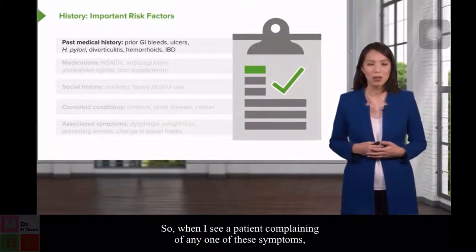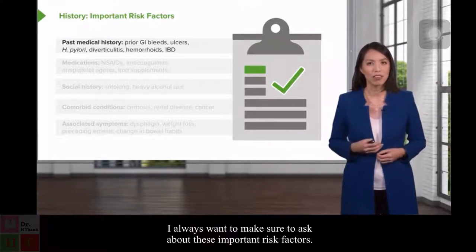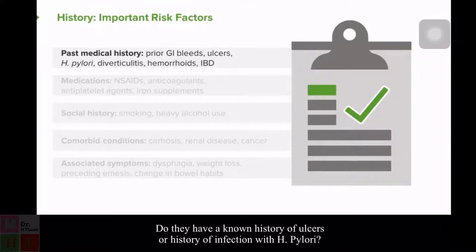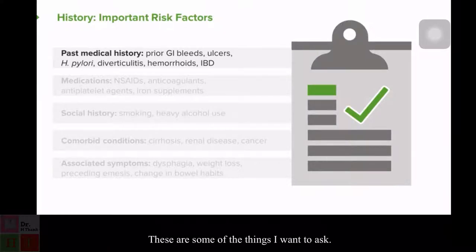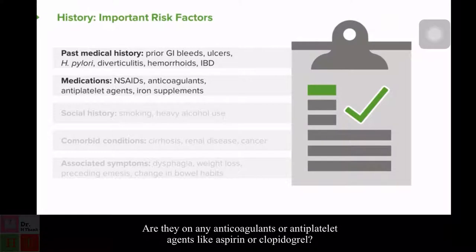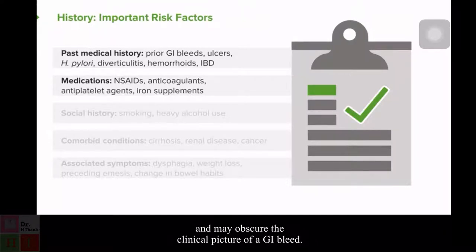When I see a patient complaining of any one of these symptoms, I always want to ask about important risk factors. Regarding past medical history: have they ever had a GI bleed before? Do they have a known history of ulcers or infection with H. pylori? For medications: do they use NSAIDs frequently? Are they on any anticoagulants or antiplatelet agents like aspirin or clopidogrel? And importantly, do they take iron supplements? Iron pills can actually turn the stool a dark color and may obscure the clinical picture of a GI bleed.